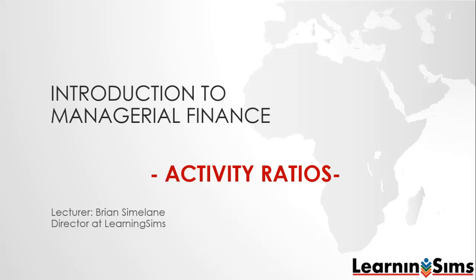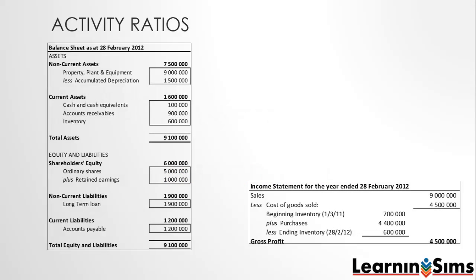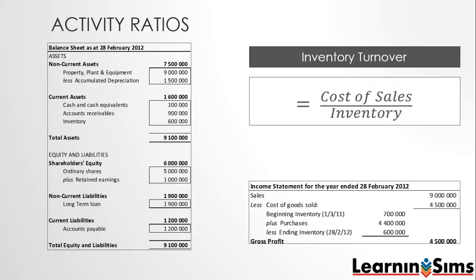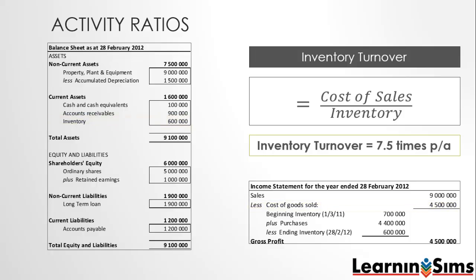The first ratio we will look at is the inventory turnover ratio. This ratio measures the activity or liquidity of a firm's inventory. It is calculated by dividing cost of sales with the inventory balance. In our example we have cost of goods sold worth 4.5 million divided by the inventory of 600,000, giving us an inventory turnover of 7.5 times per year.